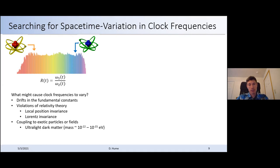Violations of relativity theory. So if you have two clocks in different reference frames, you can test the prediction of relativity and look for deviations from those predictions to test some of these fundamental principles like local position invariance or Lorentz invariance. And lastly, coupling to exotic particles or fields. This is something that Mariana has already talked quite a bit about and I'll mention a little bit more about. But clocks are really well suited for looking for these ultra light dark matter candidates with masses in this range well below an eV where they could lead to slow oscillations in the clock frequency.